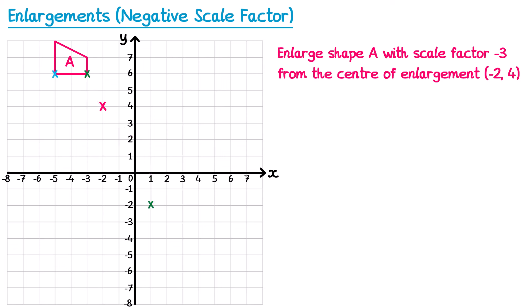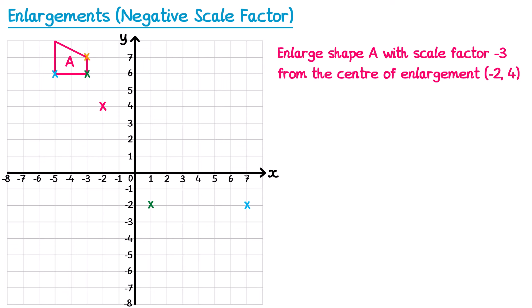For the blue cross, the journey from the center is 3 left and 2 up, so the reverse is 3 right and 2 down — done 3 times. For the orange cross, the journey is 1 left and 3 up, reversed to 1 right and 3 down — done 3 times. Each repetition gives scale factor negative 1, negative 2, and negative 3 respectively.